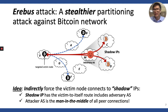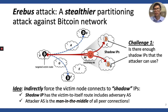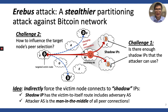This attack is highly intuitive. However, it has two technical challenges. First, you may wonder whether there are enough saddle IPs that attackers can use. The second challenge is how can the attacker influence the peer selection of the victim so that all connections of the victim are made to saddle IPs. In this talk, I will explain how we managed to address these two challenges and demonstrate that the EREBUS-based attack is indeed feasible.